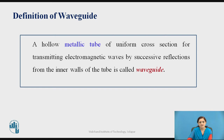What is a waveguide? A hollow metallic tube of uniform cross-section for transmitting electromagnetic waves by successive reflections from the inner walls of the tube is called a waveguide.